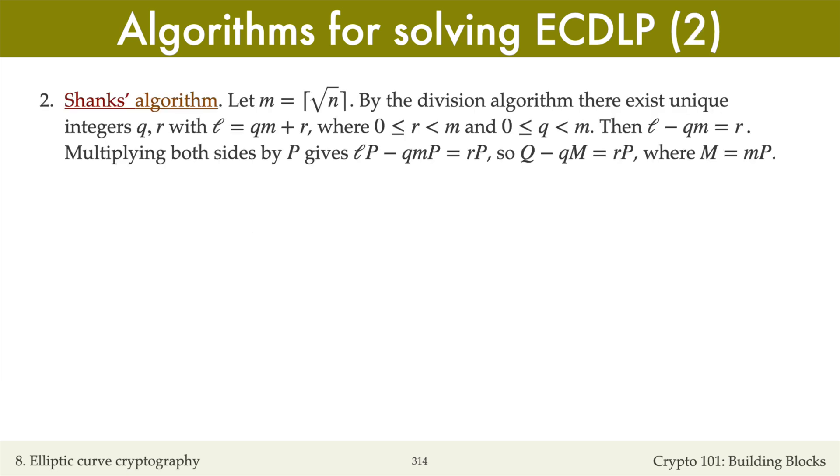There is a faster attack on the ECDLP than brute force, and that's Shanks' algorithm.